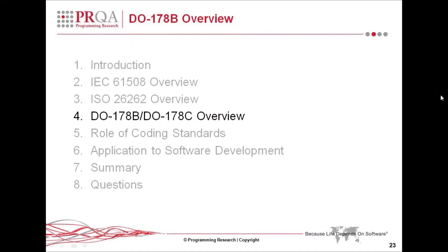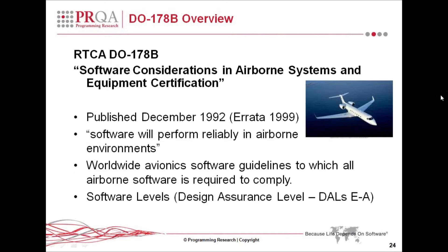Let's now move on to the aerospace industry, the DO-178B and DO-178C. The DO-178B title is Software Considerations. This is purely software — previously we've looked at hardware and production aspects, but this is just software in airborne systems.